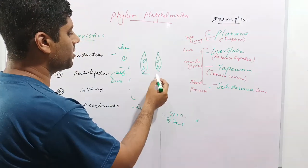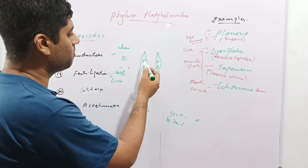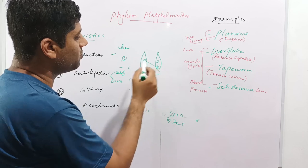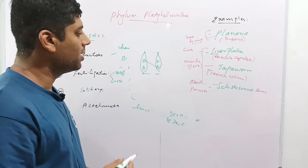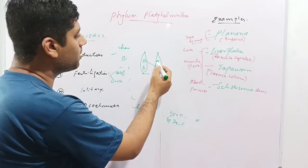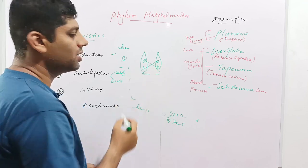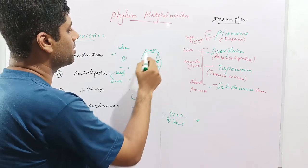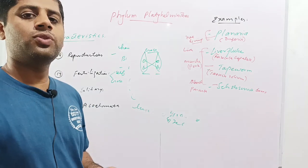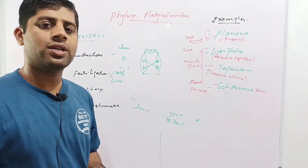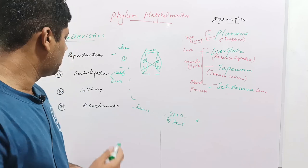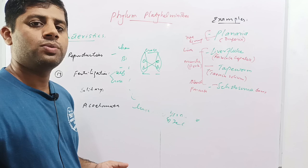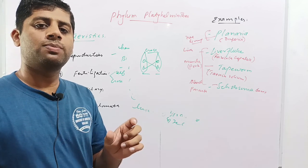For example, these are two Platyhelminthes having both male and female reproductive organs. First, the male reproductive organs of the first worm combine with the female reproductive organs of the other, and then the male reproductive organs of the second worm combine with the female reproductive organs of the first. This is cross-fertilization. These are solitary animals that don't form colonies and live individually. These worms are acoelomates, having no body space or body cavity.